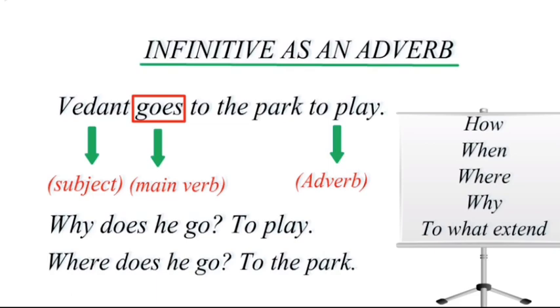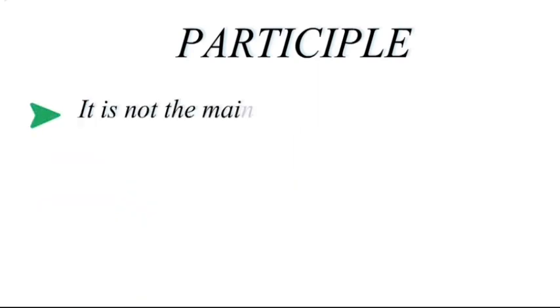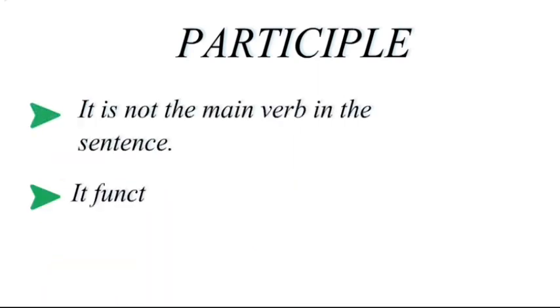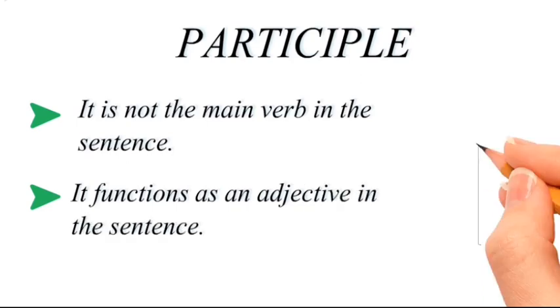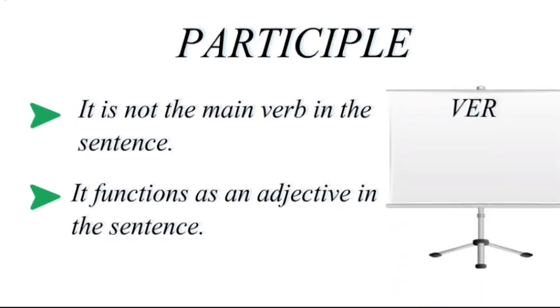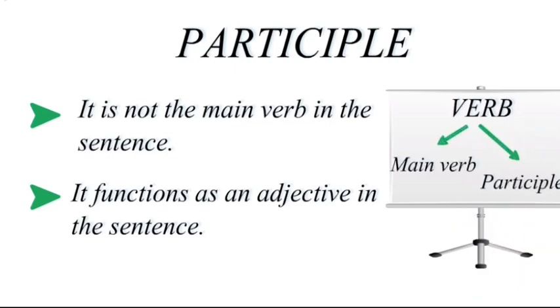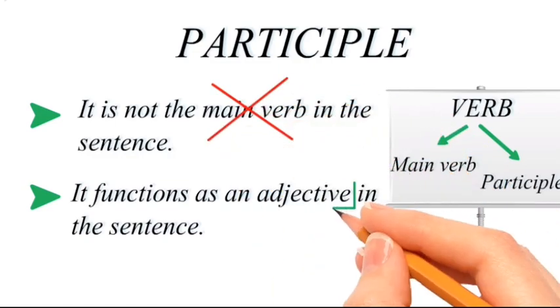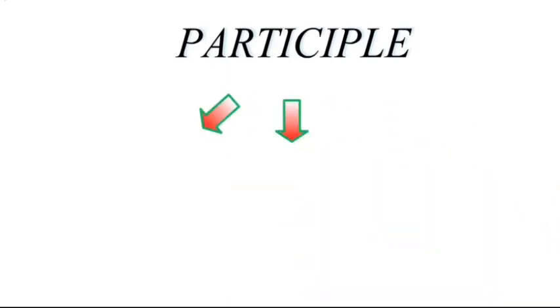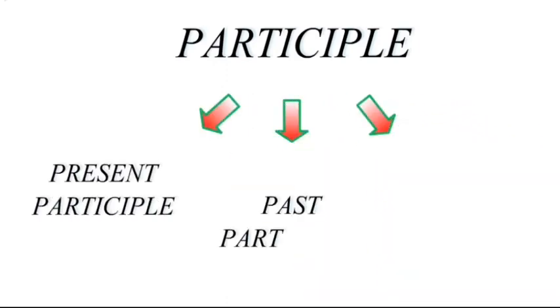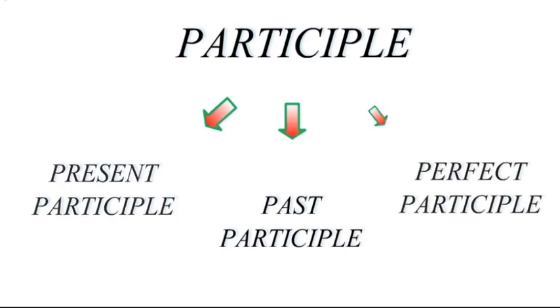Now comes participle. A participle is not the main verb in the sentence — it functions as an adjective. In any sentence there will be two verbs: one is the main verb and the second is the participle, which works as an adjective, not as a verb. There are three kinds of participle in English: present participle, past participle, and perfect participle.